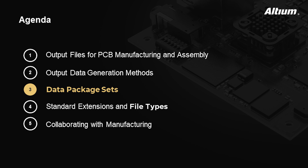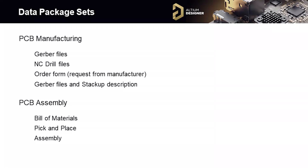Let's go over the data package sets. Depending on the completeness of the order form of the specific manufacturer, additional files may be required, such as a description of the Gerber files, information on the stack-up, or impedance calculations. Gerber files and stack-up descriptions should specify the minimum hole width, clearances, holds, and hole types such as blind and buried vias — this allows the manager to promptly provide a preliminary commercial offer. If a contract PCB manufacturer does not have its own order form, you can generate a text file that includes layer description, drawing parameters, holes, clearances, finish coding, and other PCB parameters.